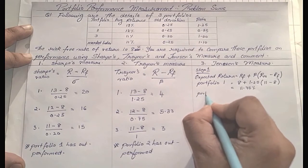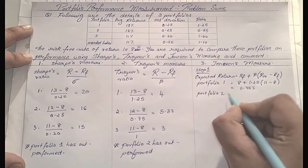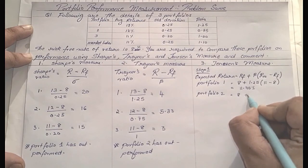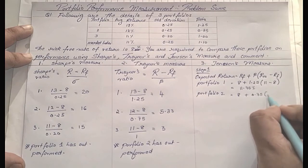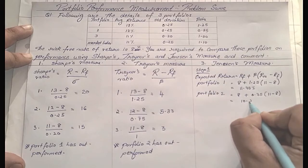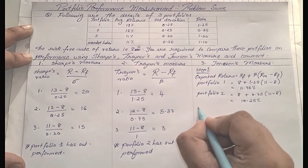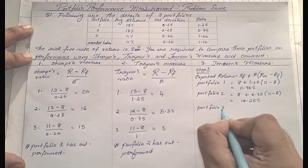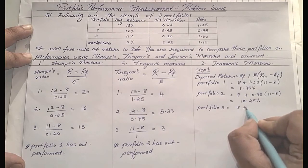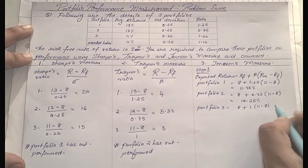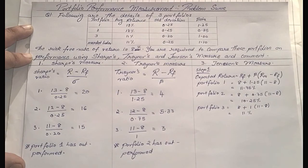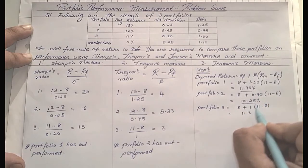Similarly for portfolio 2: 8 + 0.75 × (11 − 8) = 10.25%. For portfolio 3: 8 + 1.0 × (11 − 8) = 11%. That completes step 1 — we now have the expected return for all three portfolios: P1 = 11.75%, P2 = 10.25%, P3 = 11%.